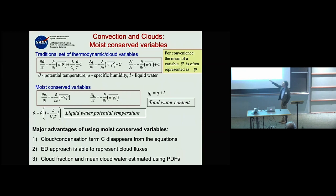There are a few problems with trying to solve these on the mean. One way to address this, which came from boundary-layer studies by Deardorff and others, was to use moist conserved variables.